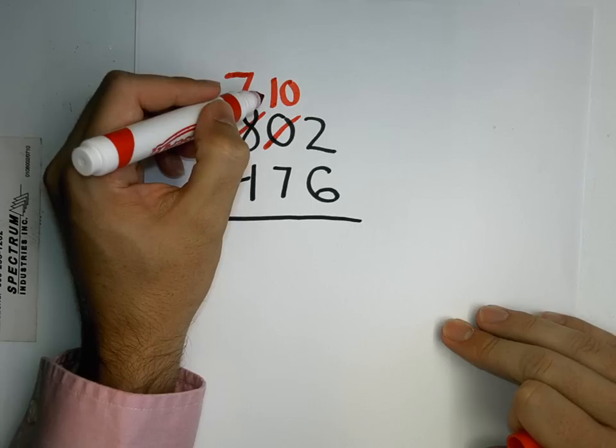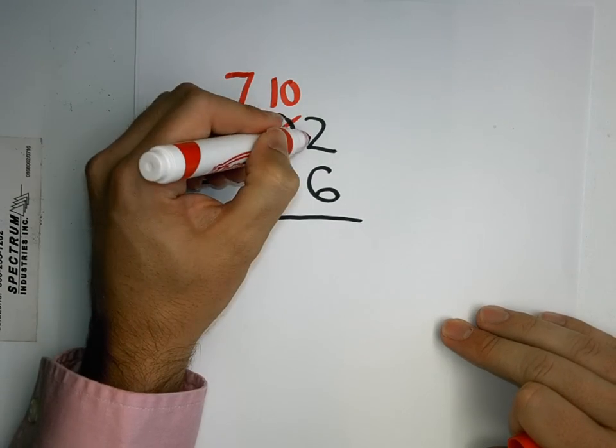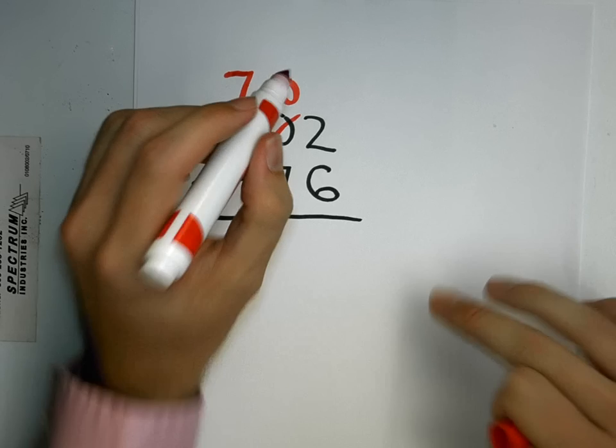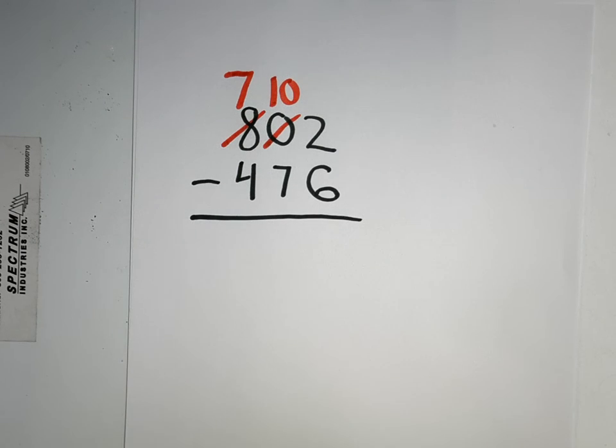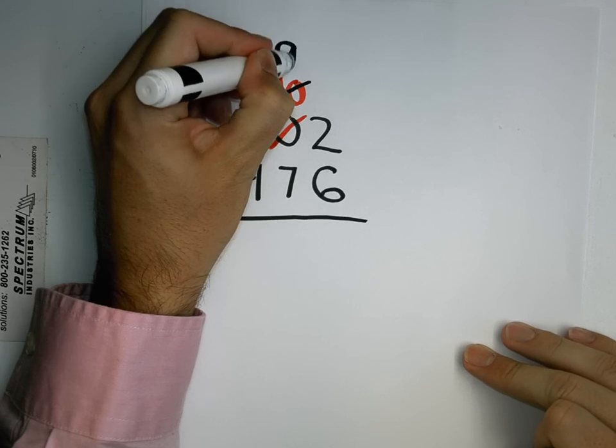Now, since I have 10 groups of 10, I can regroup over to my ones. So I'm going to cross this out, and now I have nine groups of 10.